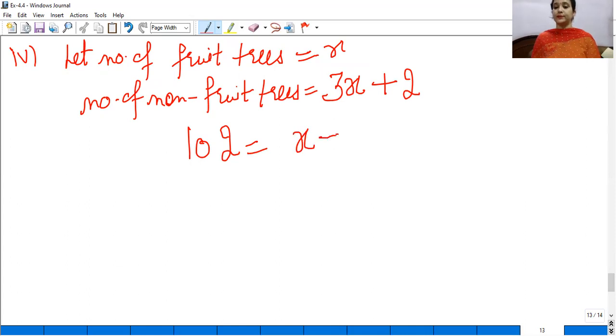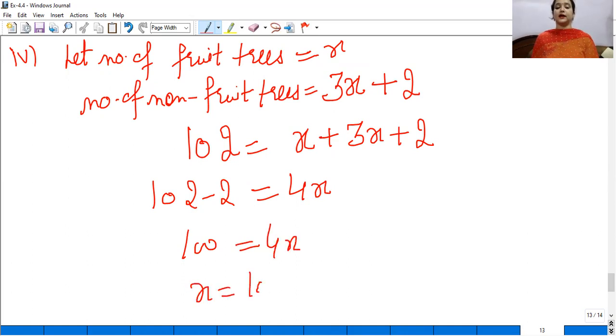We have fruit trees and non-fruit trees. In total, both will be there, right? Whether they are fruit trees or not fruit trees. So x plus 3x equals 4x. 2 goes to the other side, so minus. So what is the value of x? 100 upon 4, that is 25.